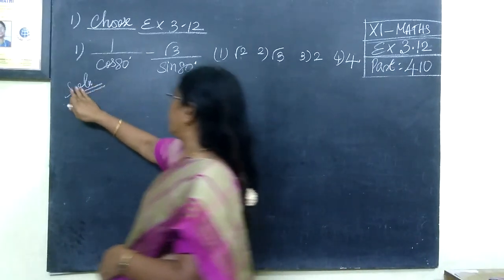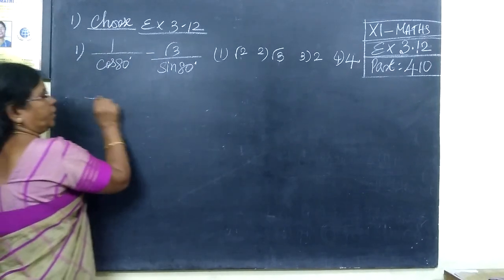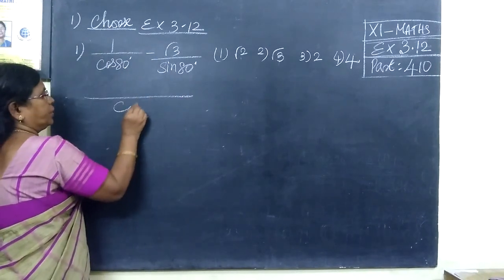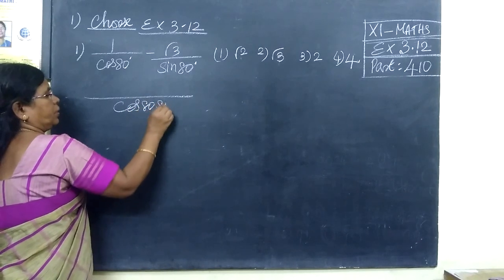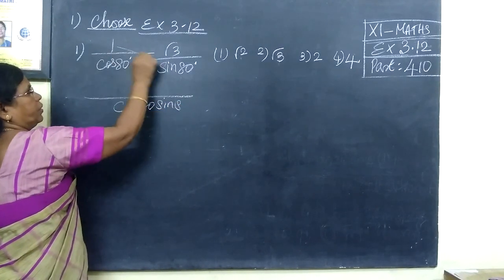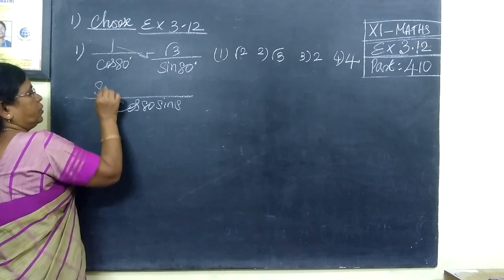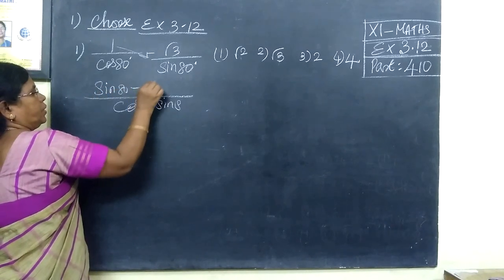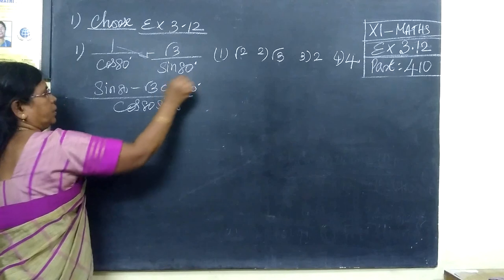We have 1 by cos 80 minus root 3 by sin 80. So, cos 80 and sin 80 together, that is sin 80 minus root 3 cos 80.